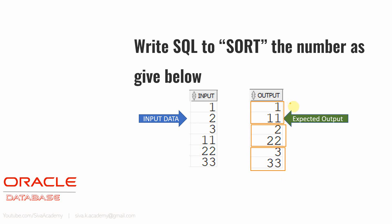For example, it should not come 11 and then 1; it should come 1, then 11. Suppose there are more numbers like 110 and 119, then the expected output should be 1, 11, 110, 119, followed by 2, 22, 33. That is the expectation.